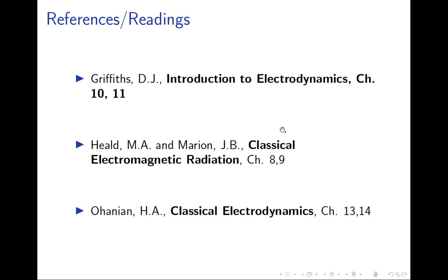The references for this lecture are the following. Of course, Griffith's is our textbook. You can find many of these cases treated in chapters 10 and 11. However, especially regarding the half-wave antenna, I think Griffiths doesn't do a very good job. Neither does it do a very good job talking about cases such as when the velocity of a charge is perpendicular to the acceleration, which is sometimes known as synchrotron radiation. For that, the book Classical Electromagnetic Radiation by Heald and Marion is pretty good. Ohanian chapters 13 and 14 are also pretty good.